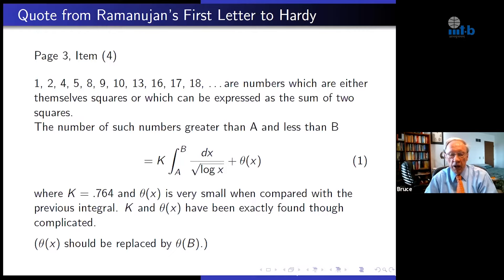I'd like to begin with the fourth item from Ramanujan's first letter to Hardy. Ramanujan said: 1, 2, 4, 5, 8, 9, 10, 13, 16, 17, 18 are numbers which are either squares or can be expressed as a sum of two squares. He then gives a formula for the number of such numbers greater than a and less than b. The constant in front of the integral he says is 0.764. Theta of x is very small compared with the integral, and he says he has exactly found these, though complicated. Note there's a slight misprint: he should have theta of b rather than theta of x.